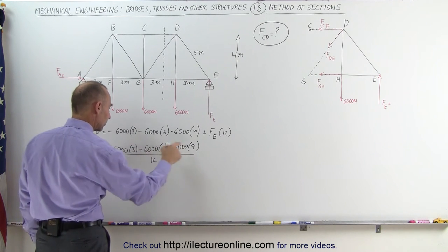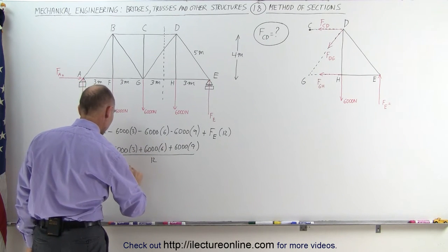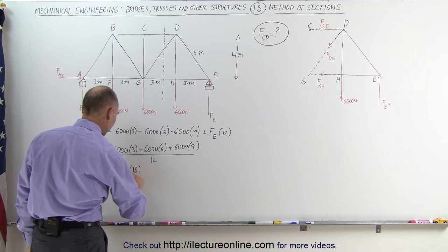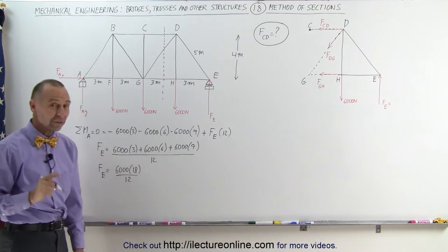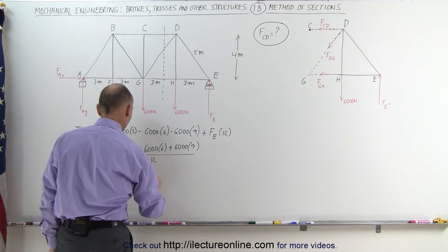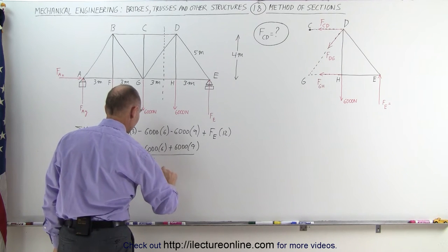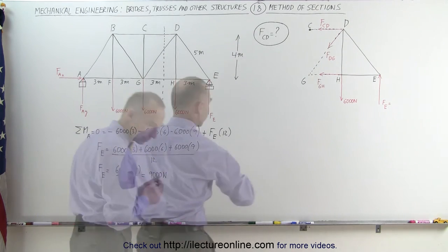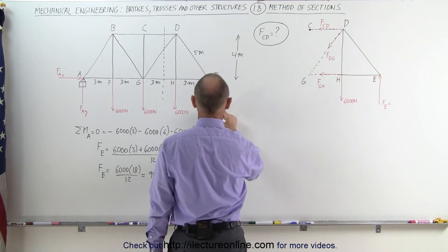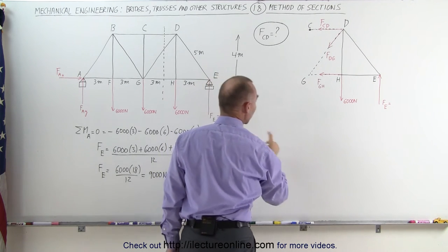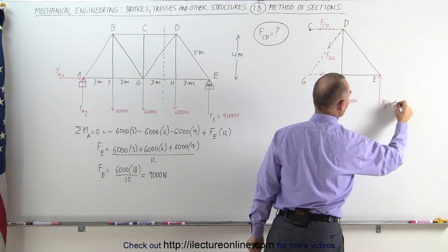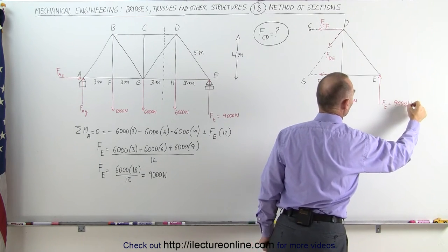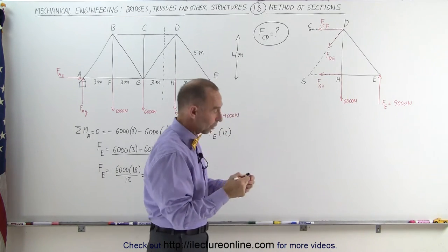Simplifying this, that's 6,000 times 18 divided by 12 and 18 divided by 12 is 3 halves which means that the force of E is equal to 9,000 newtons. And this then is equal to 9,000 newtons which means we can put that in here. That's equal to 9,000 newtons. Now this is how the method of sections work.